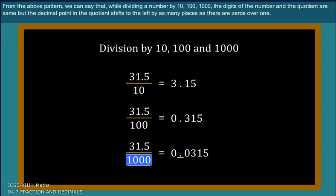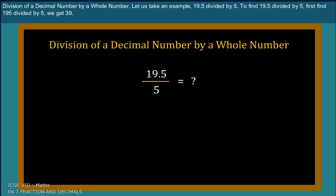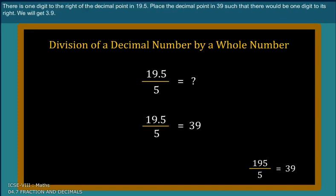Division of a decimal number by a whole number. Let us take an example: 19.5 divided by 5. To find 19.5 divided by 5, first find 195 divided by 5. We get 39. There is one digit to the right of the decimal point in 19.5. Place the decimal point in 39 such that there would be one digit to its right. Now we get 3.9.